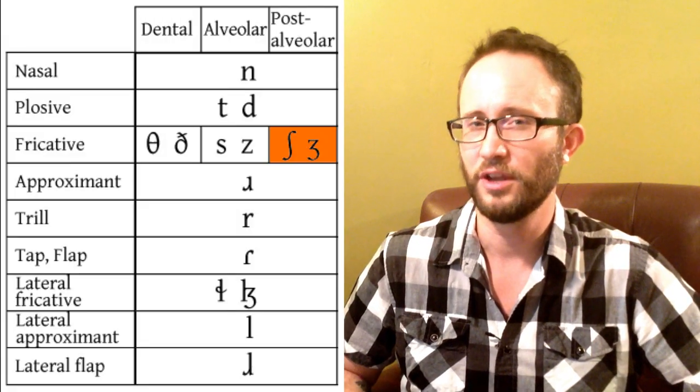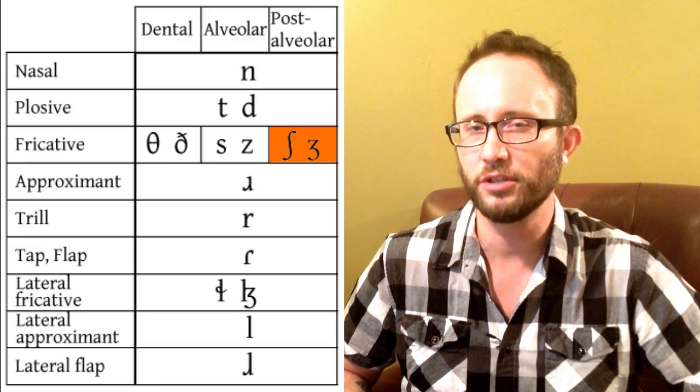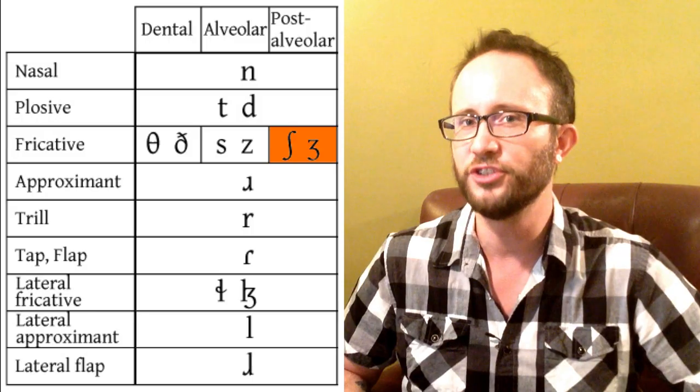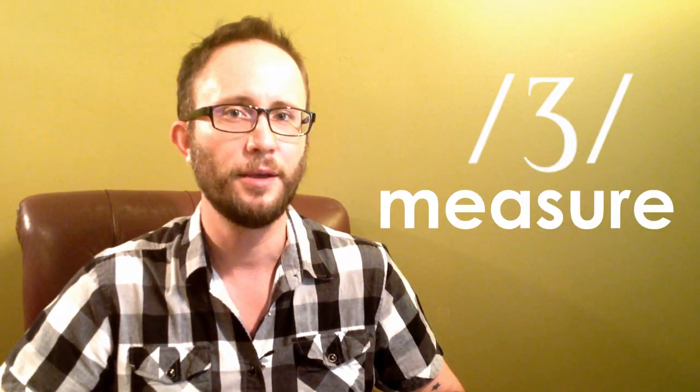Just beyond the alveolar ridge we have the post-alveolar sounds — sounds made just a little bit further back, where the tip of your tongue touches just behind that ridge, which you can think of as the roof of your mouth. The post-alveolar sounds in English are 'SH' as in shoot, 'ZH' as in measure, 'CH' as in church, and 'J' as in judge.